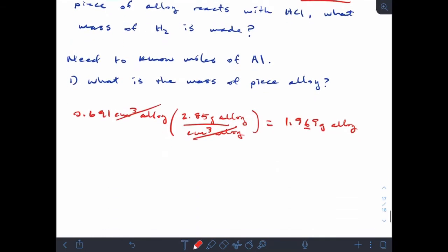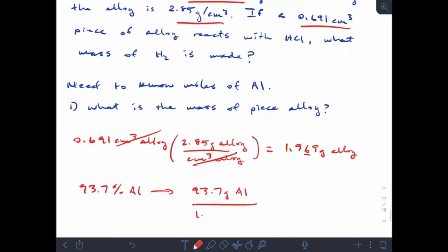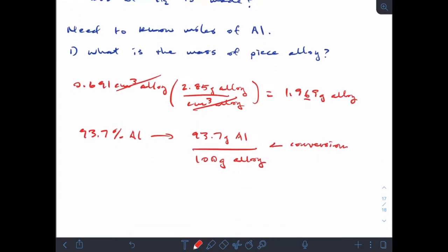Now that I know grams of alloy, the next piece of information that I have is percent mass. It's 93.7% aluminum by mass. Remember, percent means per hundred. So 93.7% aluminum means 93.7 grams of aluminum per hundred grams of alloy. Guess what this is? It's a conversion factor.